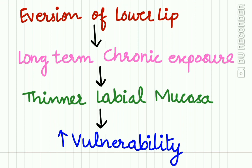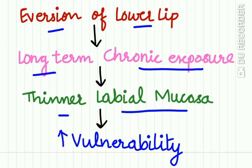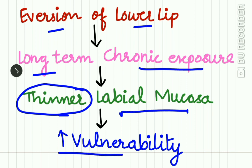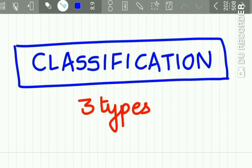Eversion of the lower lip causes long-term exposure of the lower lip to irritants. The lower lip has a thinner labial mucosa, and because of this chronic exposure to irritants, this thin labial mucosa increases the vulnerability of the labial mucosa to develop squamous cell carcinoma.